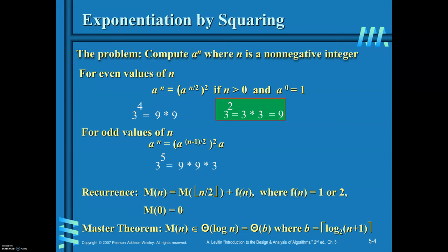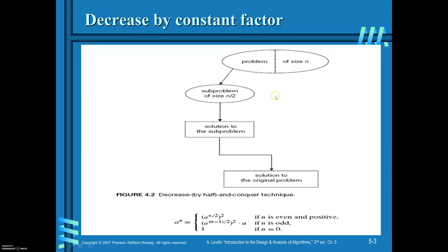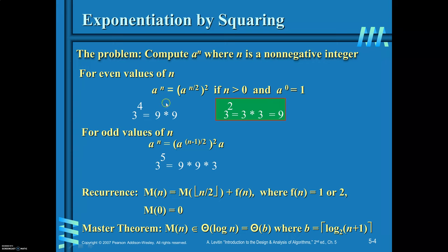Now we will see exponentiation by squaring. You are required to find a^n by the decrease by constant factor method, where the problem size is decreased by the constant factor 2. This can be written as: a^n equals (a^(n/2))^2 when n is even, with base condition a^0 equals 1.